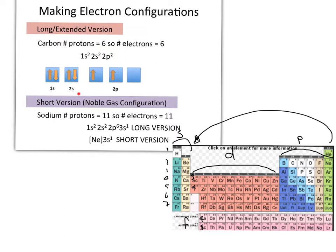If you wanted to write the orbital notation diagram for carbon, the 1s and 2s levels are filled and paired because they are forced to be, but notice there is no pairing in the 2p orbitals — those two electrons sit separately so that they can minimize energy.